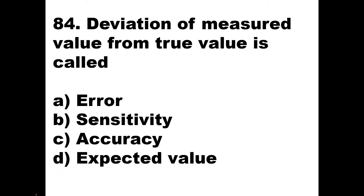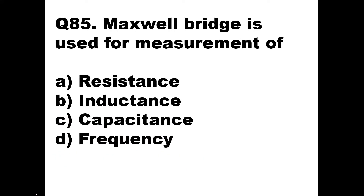Then we will go to the next question. A deviation of measured value from the true value is called what? This is a basic question of electronic measurement and instrumentation EMI subject. Anything which is deviated from the true value is called as error. So a deviation of measured value from the true value is called as error. So option A, error, will be the right answer here.